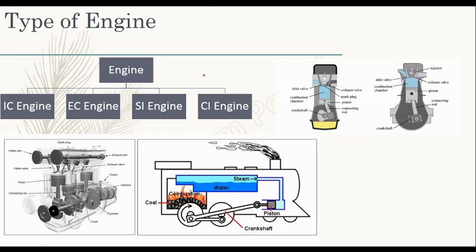Now, I already told you about engines — we have different types of engines. We have different types of engines based on size: big engines, medium engines. And based on speed: high-speed engine, medium-speed engine, slow-speed engine.